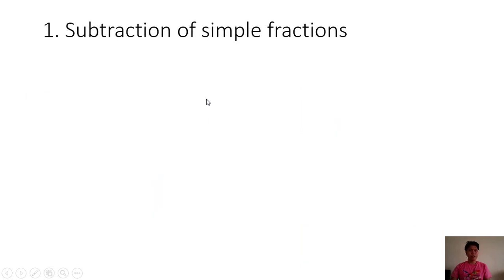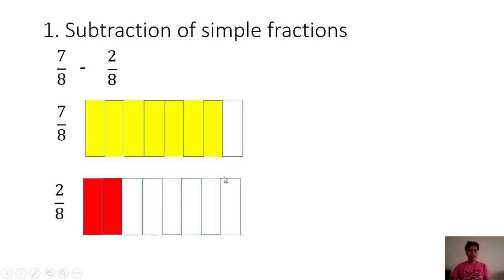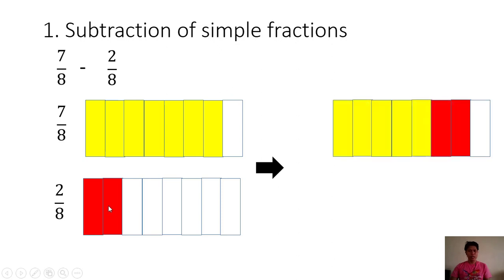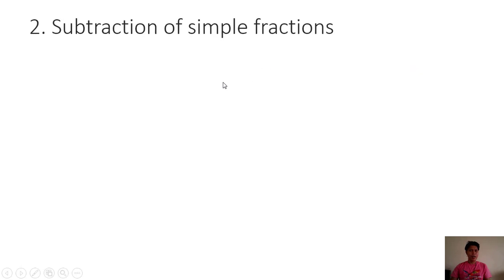Example number 5: subtraction of simple fractions. We have 7/8 minus 2/8. This is 7/8 and this is 2/8. Instead of adding the shaded parts, we are going to take away the 2 red shaded parts. By taking 2 red shaded parts away, we have 5 shaded parts remaining. Therefore, 7/8 minus 2/8 is equal to 5/8.